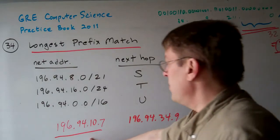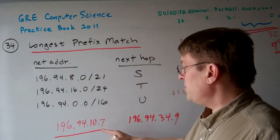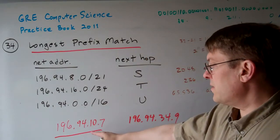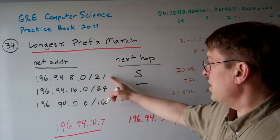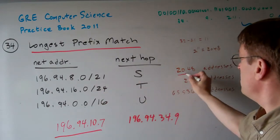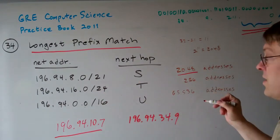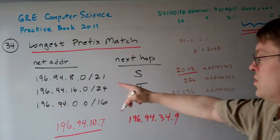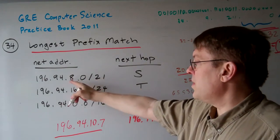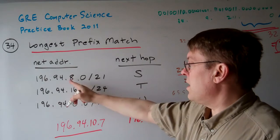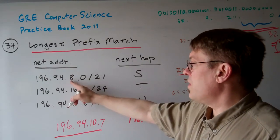So, for example, for this one right here, we have 196.94.10.0. This one gives us a range of 2,048 addresses. So, 2,048 addresses is going to be 8, 9, 10, 11, 12, 13, 14, 15.